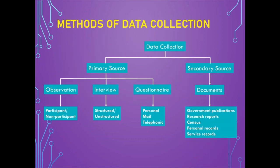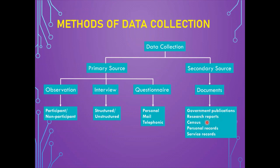There are two major sources of data collection: primary and secondary. Primary source methods include observation methods, interview methods, and questionnaire methods. Observation methods can be participant or non-participant; interviews can be structured or unstructured; questionnaire methods can be personal, mail, or telephonic. Secondary sources of data are basically documents sourced from government publications, research reports, census, personal records, service records, or any other sort of records.